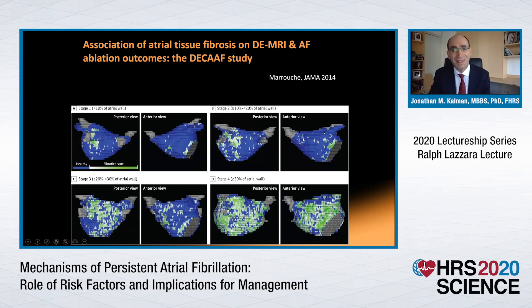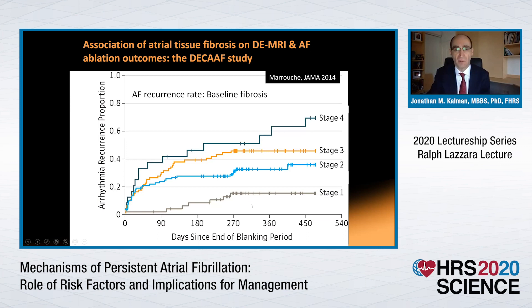We know from the DECAF study — the work of Nasir Marouche on MRI — that the more extensive the fibrosis, as you move from stage one through stage two and three to extensive fibrosis of stage four, ablation outcomes deteriorate. The more remodelling you have, the worse the outcome, with higher recurrence rates in stage four versus stage one.